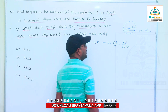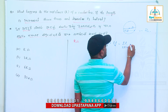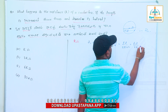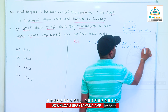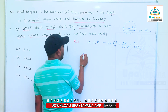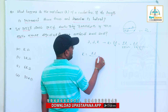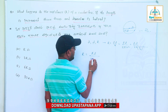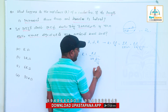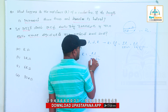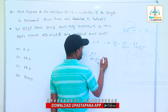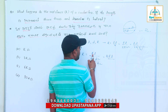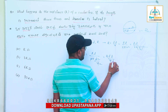R equals D by 2. Substituting into the formula: R equals rho L divided by pi times (D/2) squared, which gives rho L by (pi D squared divided by 4). Simplifying, R equals rho L by pi D squared (times 4/pi cancels), giving R proportional to rho L by pi D squared.